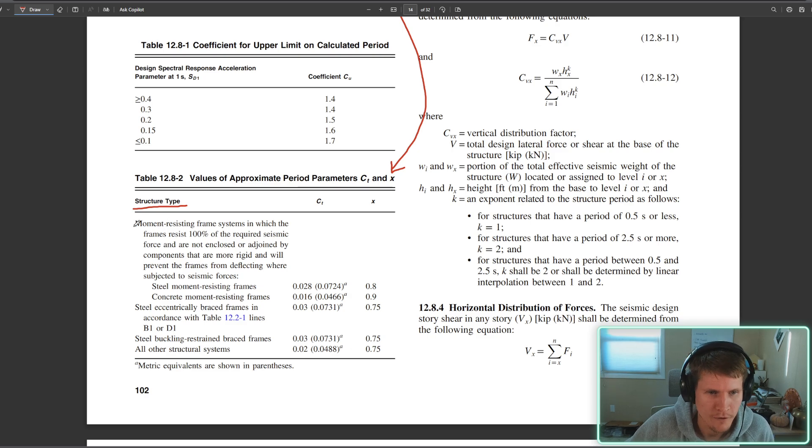Based on structure type, the first one is a mouthful: moment resisting frame systems. We have two of those - a concrete moment frame and a steel moment frame. We don't know if they're special, intermediate, ordinary, anything like that. It doesn't really matter when you're determining your approximate period. When you get into detailing and designing the actual system, that's when it comes into play and whether or not you're permitted to use certain system types depending on the seismic category that you are designing for. But that's a whole nother thing that's not part of this six minute problem.